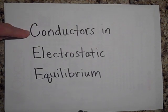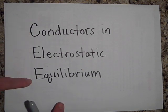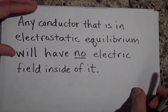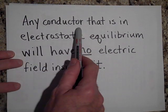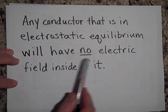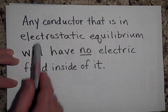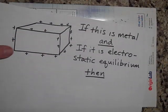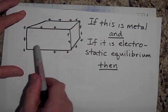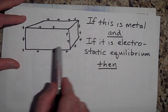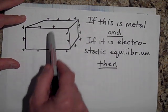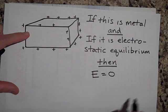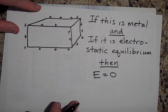I want to tell you about conductors — metals in which all the charges are stationary. Any conductor that is in electrostatic equilibrium will have no electric field inside of it. Let's say it's a big hunk of copper. If this is a metal and it's in electrostatic equilibrium — meaning the charges aren't moving — then the electric field inside will equal zero.